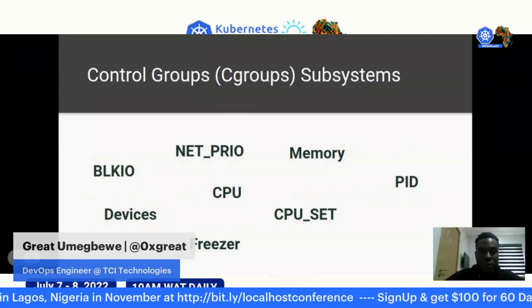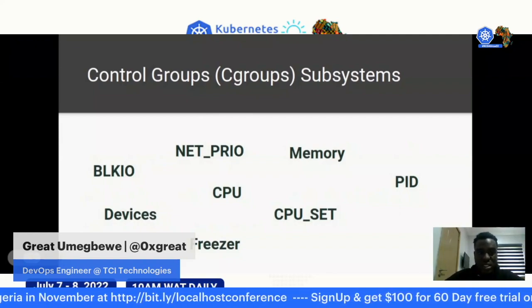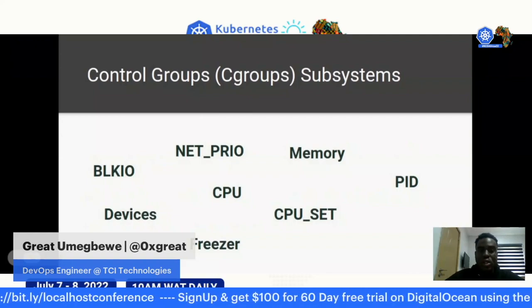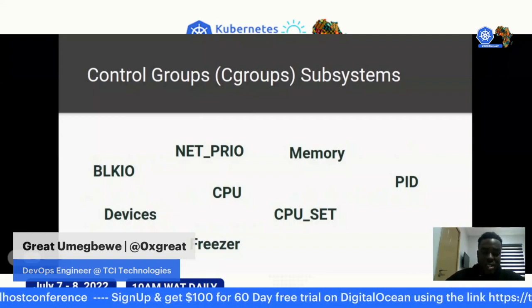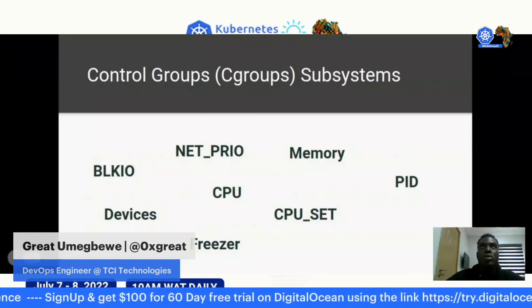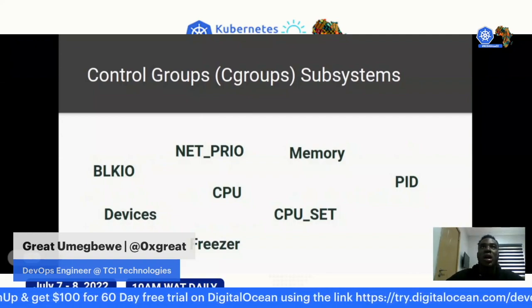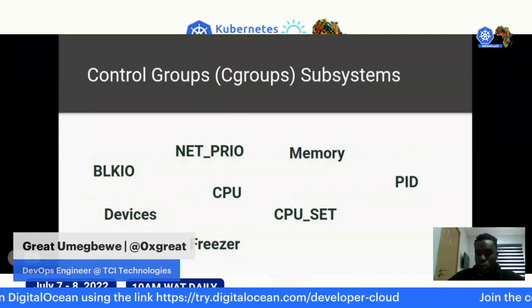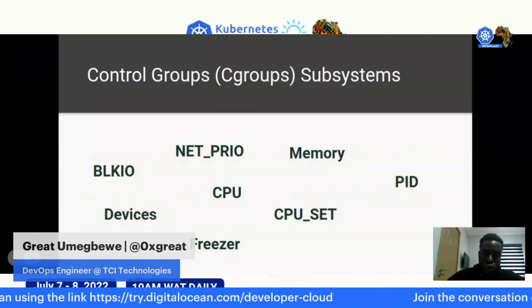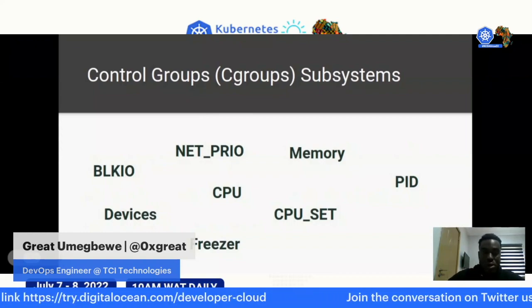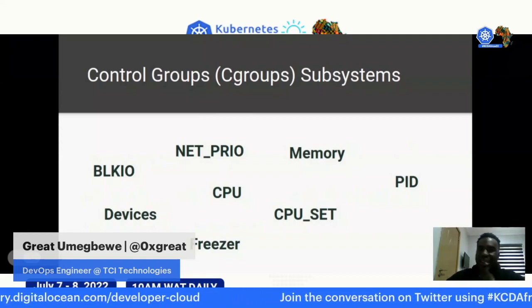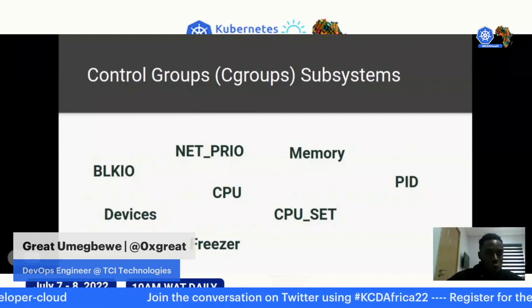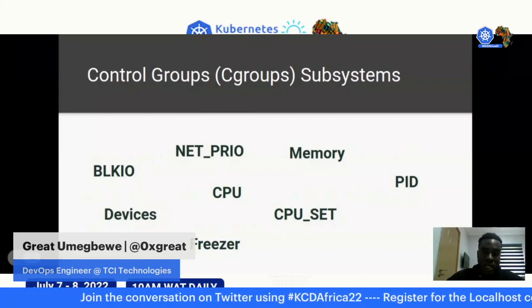For namespaces: while cgroups limits what you are going to use, namespaces limits what you can see.